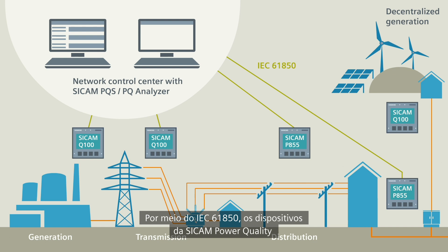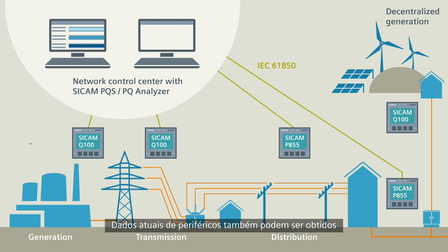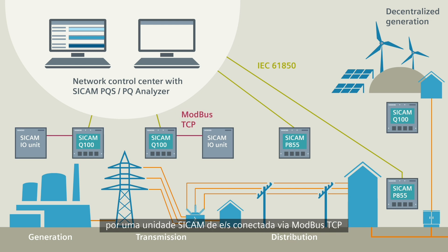Via IEC 61850, CCAM Power Quality devices can transmit event recordings in standard formats, such as PQDIF or Comtrade, to a CCAM PQS system. Current data from the peripherals can be acquired by a CCAM I.O. unit connected via Modbus TCP and passed on to the control center by the CCAM device.